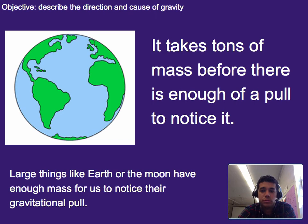So large things like the Earth or the moon or the sun or other planets have enough mass for us to notice their gravitational pull. But smaller things than that, it's not as much, and so you won't notice it unless you're doing a really precise experiment.